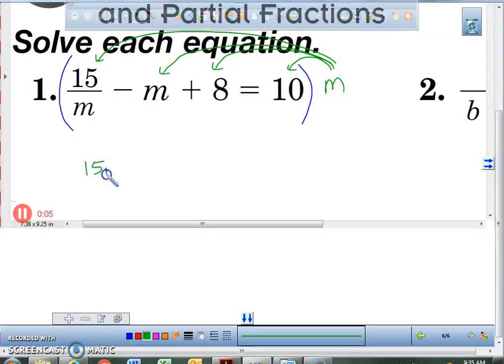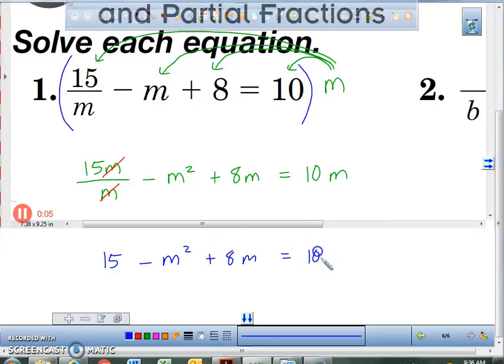When you do that, you will get 15 times M over M minus M squared, M times M is M squared, plus 8M equals 10M. The reason why we multiply every single number by an M is so that we can have this scenario, and these M's right here will simply cancel each other out, and now we no longer have an M in the denominator.